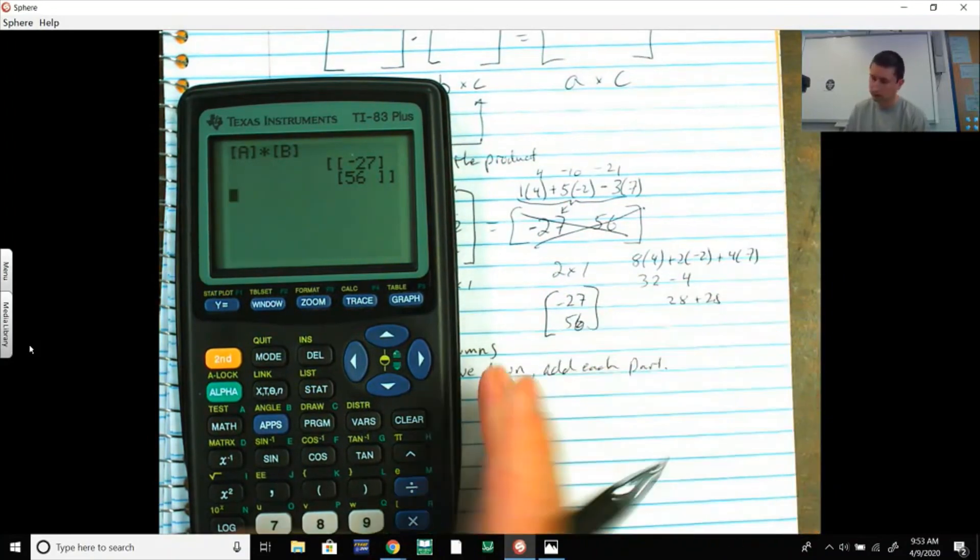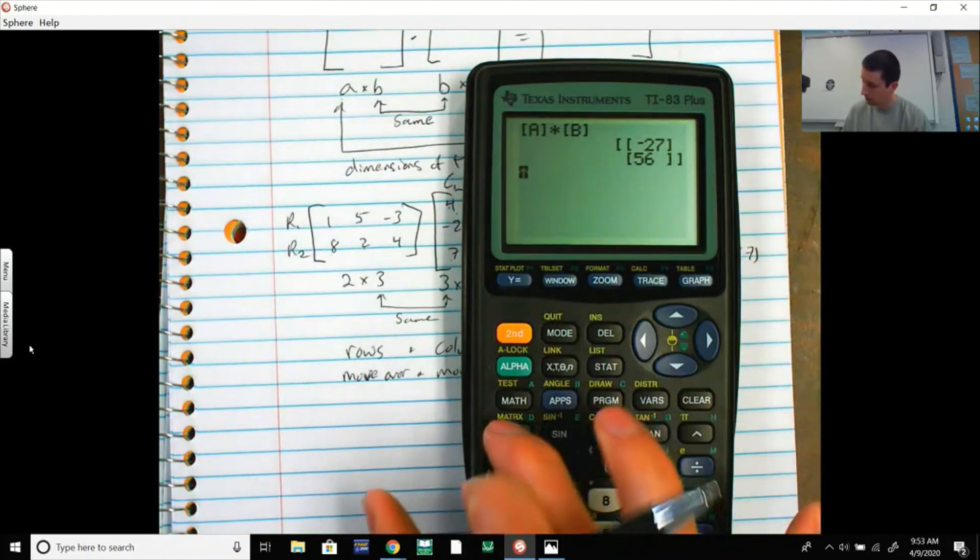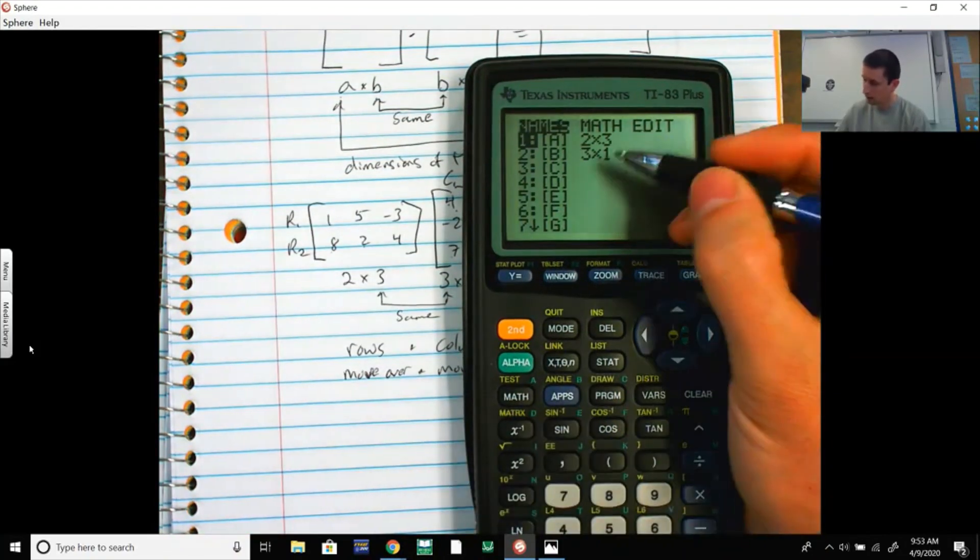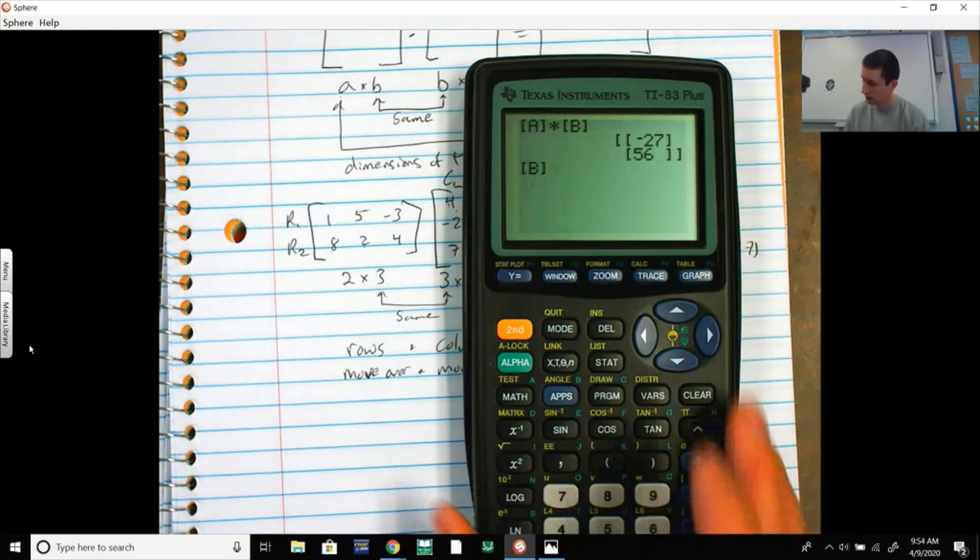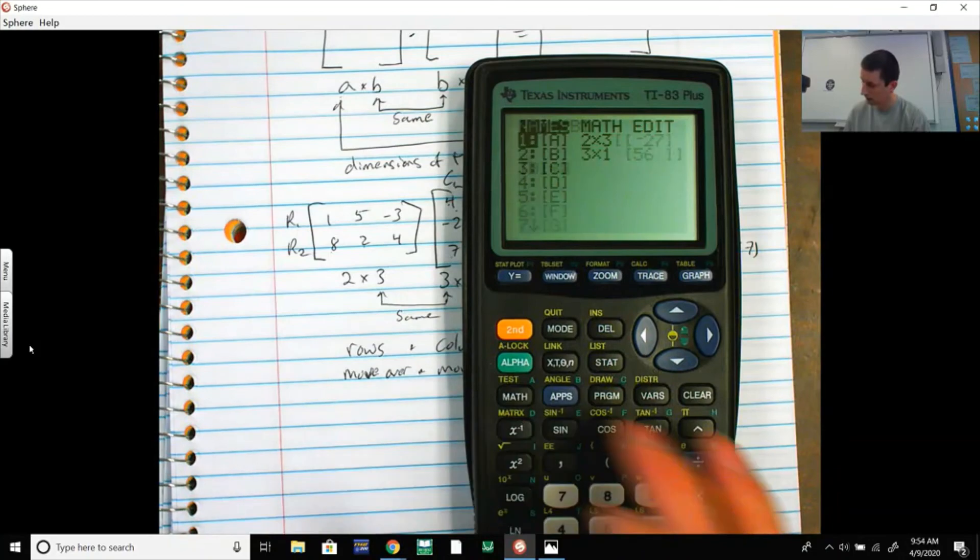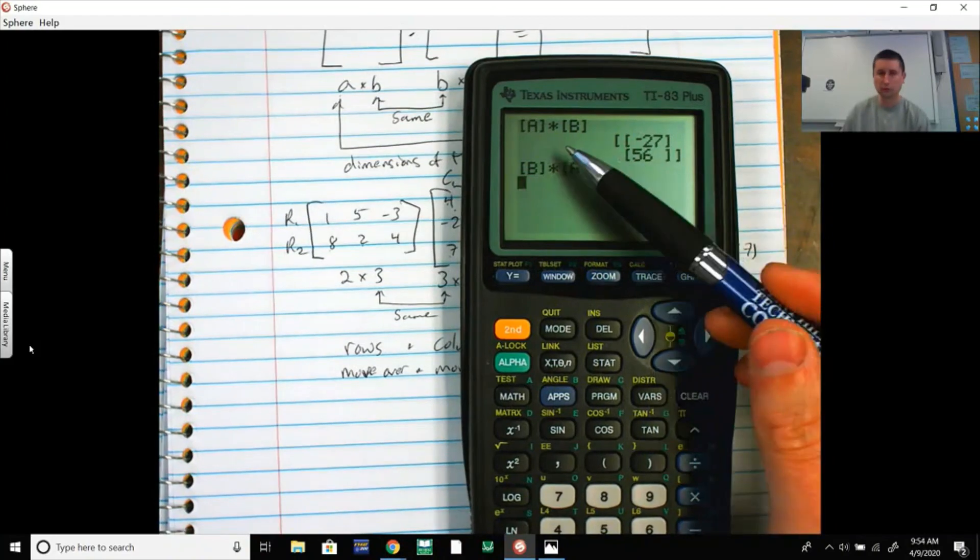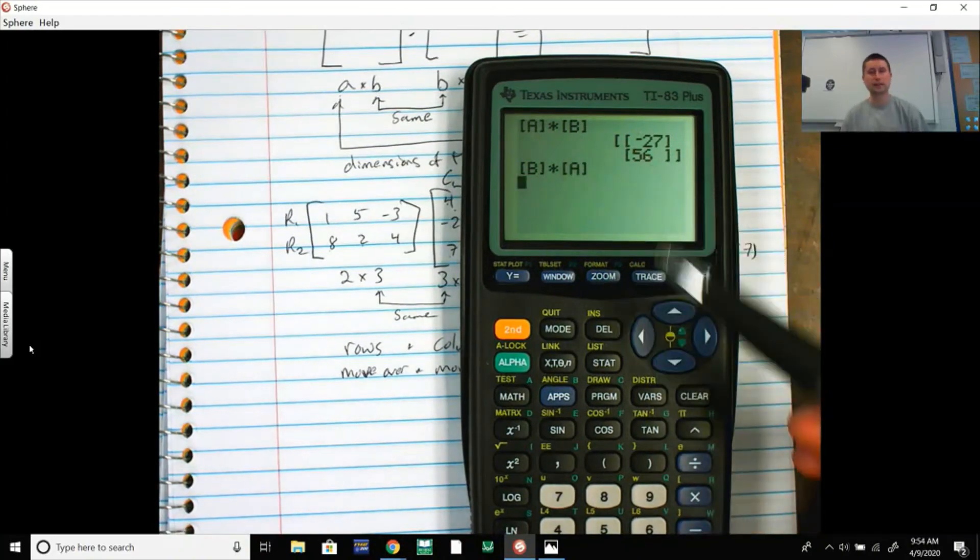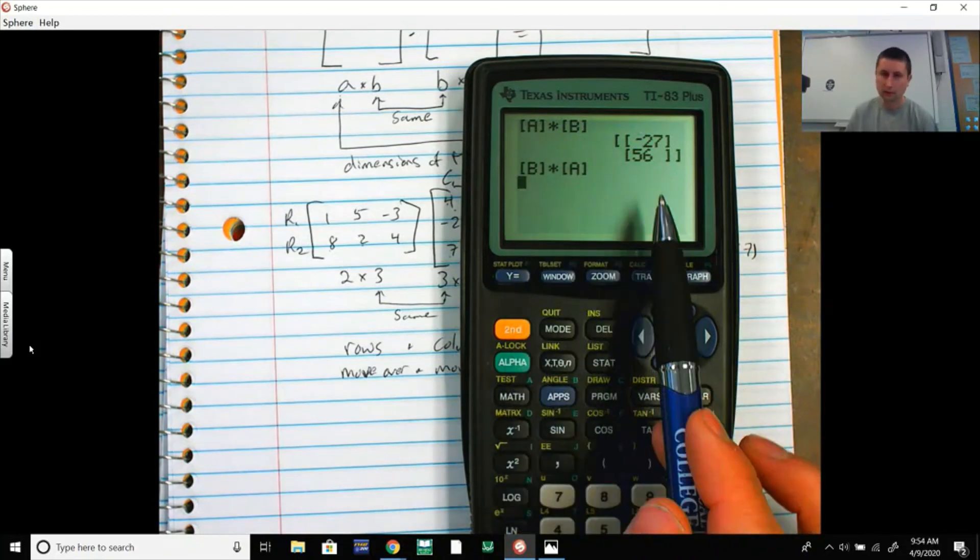Now notice, if I do it the other way, if I try to take B times A, that's a 3 by 1 by 2 by 3. It's going to say dimension error. If I try to take B times A: dimension mismatch. It won't like that. So you notice matrix multiplication is not what they say is commutative. A times B does not always equal B times A.